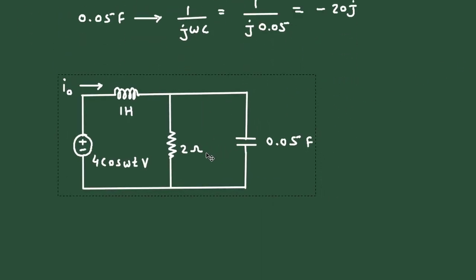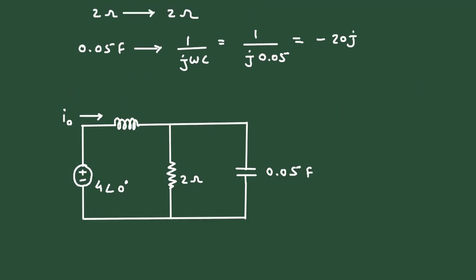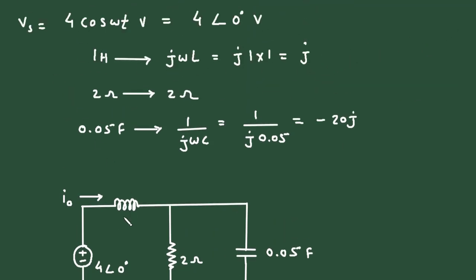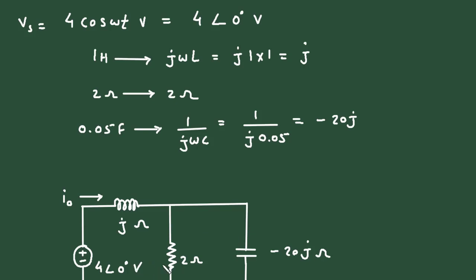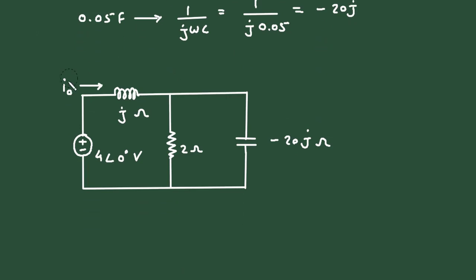Now we redraw the circuit with the phasor domain values. The source is 4 at angle 0 degrees volts; the inductor becomes j ohm; the resistor remains 2 ohm; the capacitor becomes minus 20j ohm. The current IO is now capital IO in the phasor circuit.